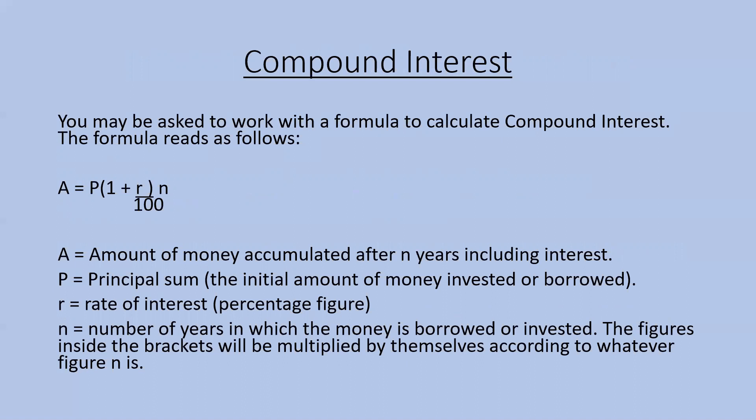We're now going to look at compound interest, which is a little bit more complicated to work out than simple interest — though it's fine once you know the procedures. You're given a formula: A equals P, open bracket, 1 plus R divided by 100, close bracket, to the value of N.